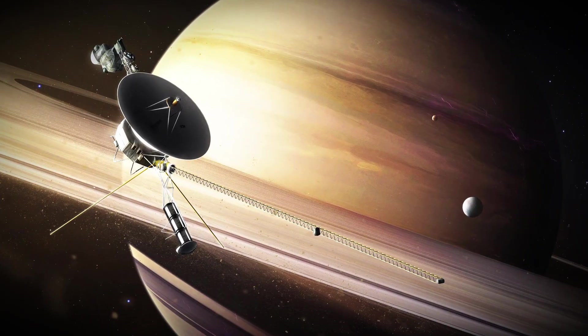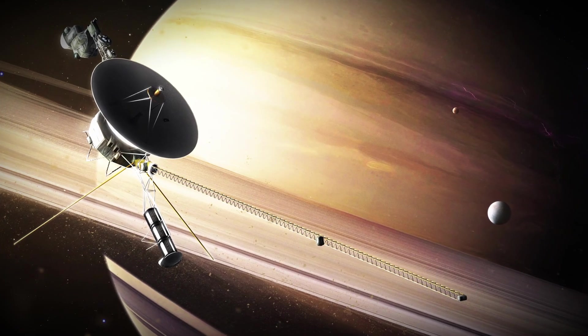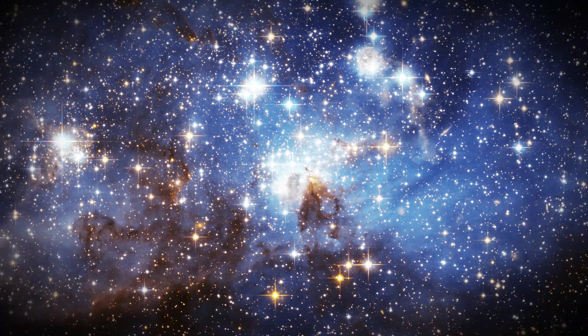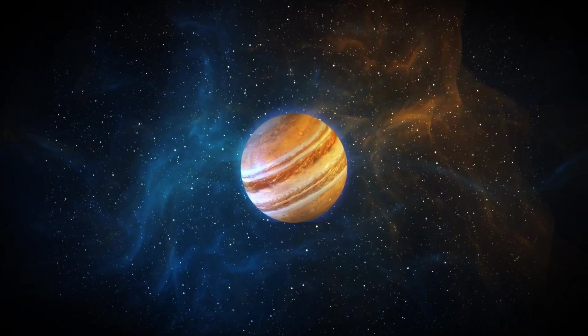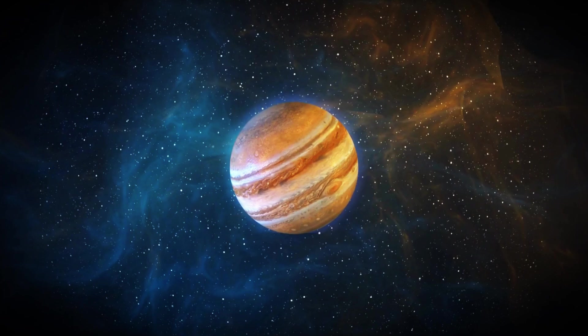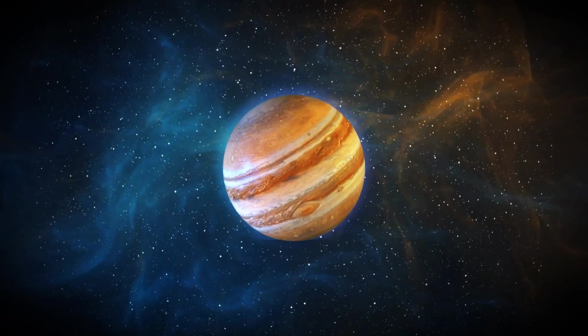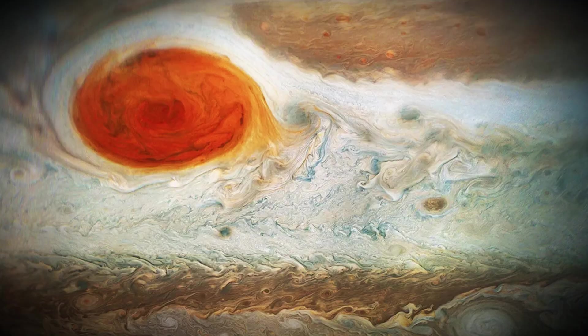In March 1979, just 18 months after launch, Voyager 1 reached Jupiter. This was a remarkable achievement. During its flyby, it captured stunning images and provided invaluable data on Jupiter's turbulent atmosphere and intense storms. It photographed the great red spot and the vibrant cloud bands.